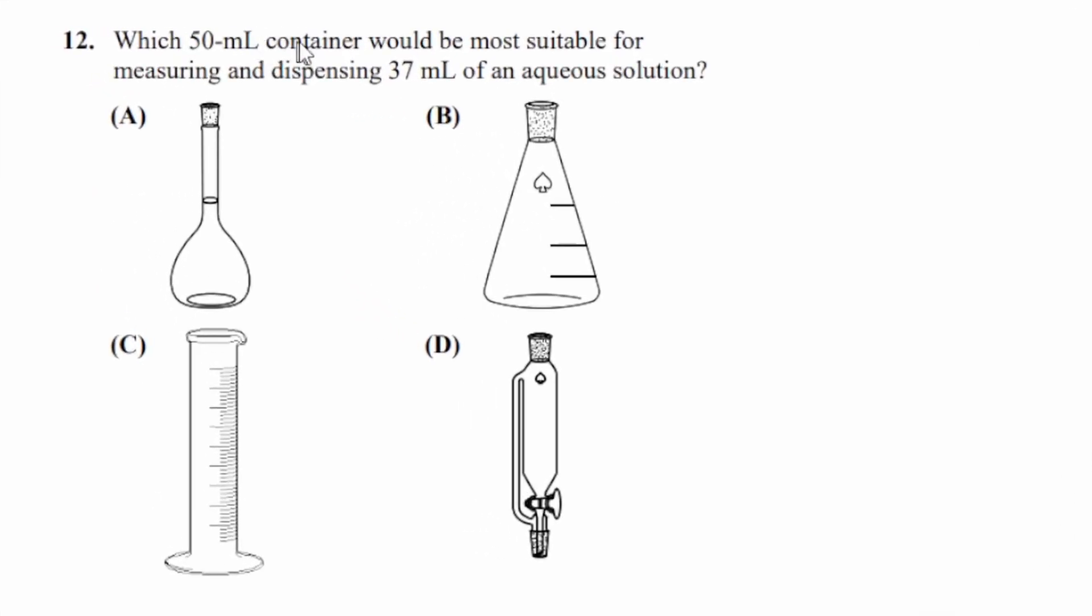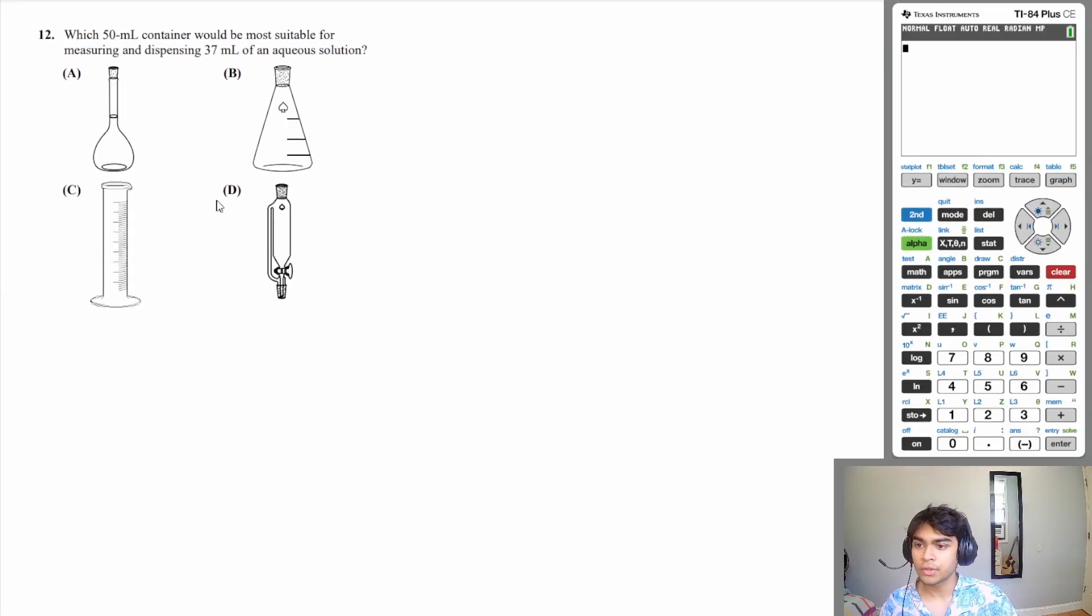All right, 12 last question. Which 50 ml container would be most suitable for measuring and dispensing 37 ml of an aqueous solution? So let's go through our answer choices. A here is a volumetric flask. Volumetric flasks have one marking over here.